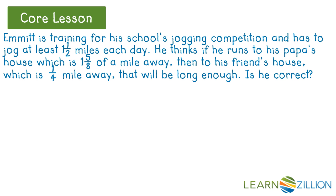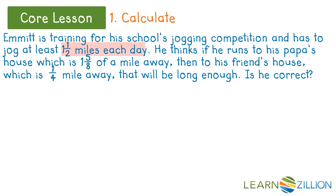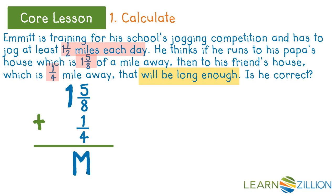Is he correct? To solve this problem, we are going to calculate, estimate, and compare. First, let's calculate the problem. We know Emmett wants to jog one and a half miles each day. He thinks if he runs one and five-eighths of a mile plus a quarter of a mile it will be enough. Let's calculate to find out if one and five-eighths plus one-fourth equals m for miles.